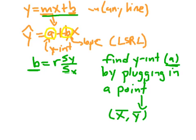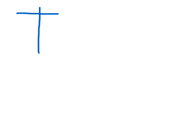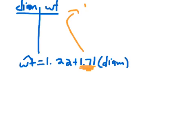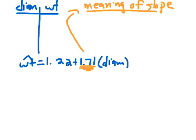Going back to our example: we had diameter and weight of melons, and we had weight-hat equals 1.22 plus 1.71 times diameter. One thing you might ask is: what does 1.71 actually mean? What is the meaning of the slope? For every increase of one unit of diameter (which was inches), the predicted weight goes up by 1.71 units of weight (ounces).